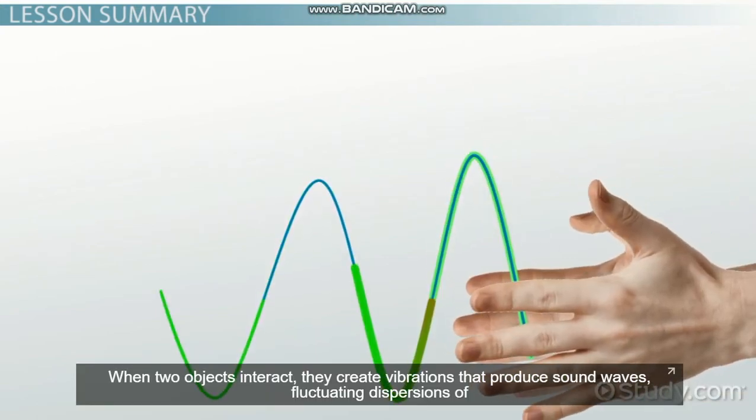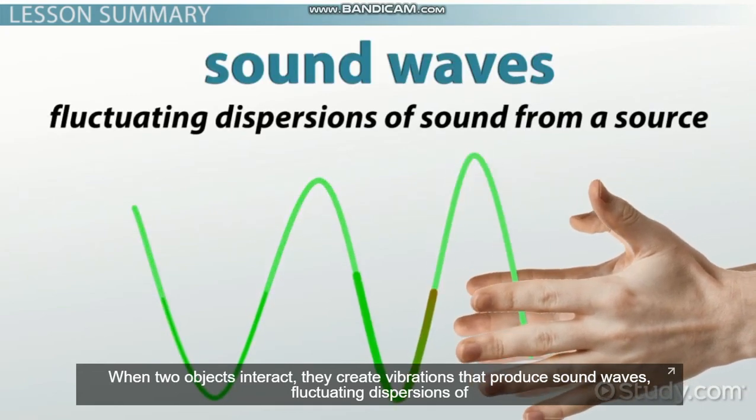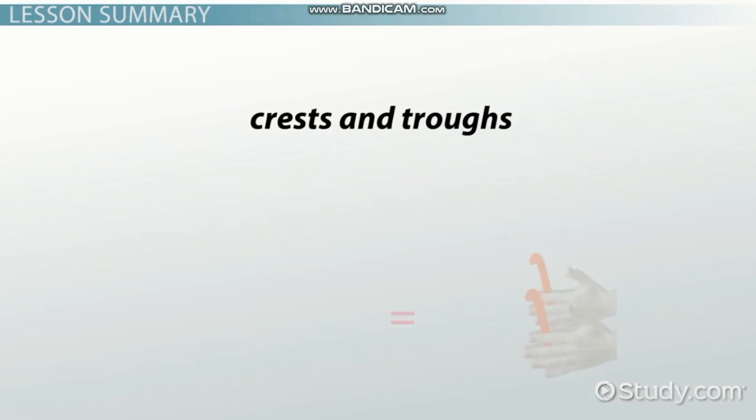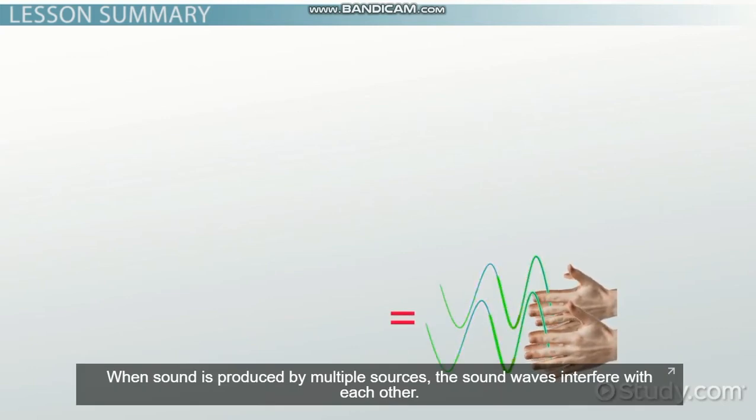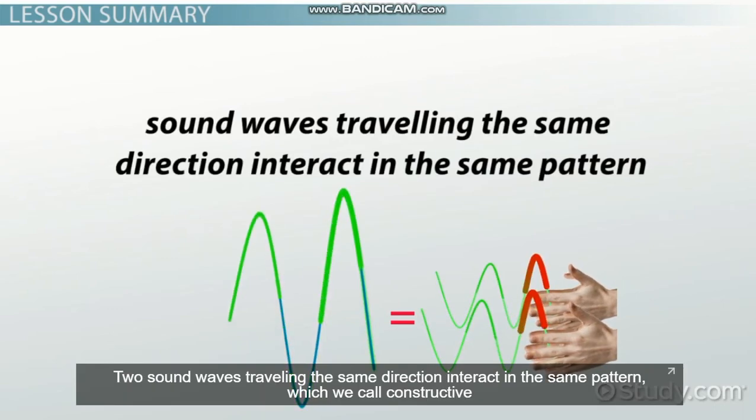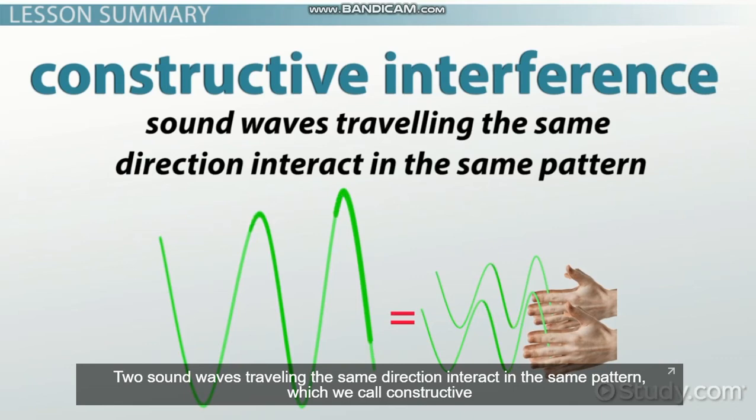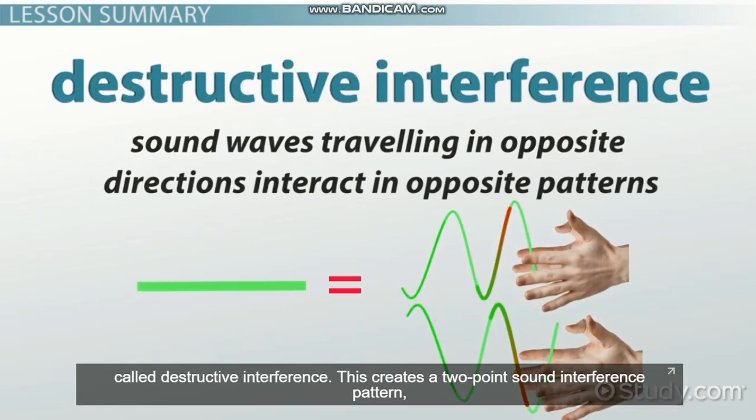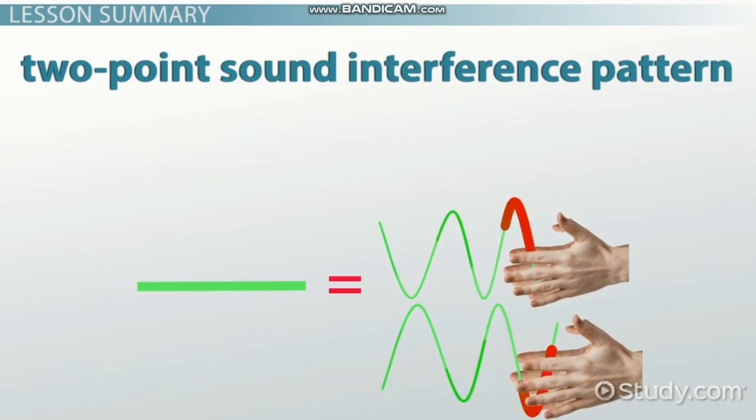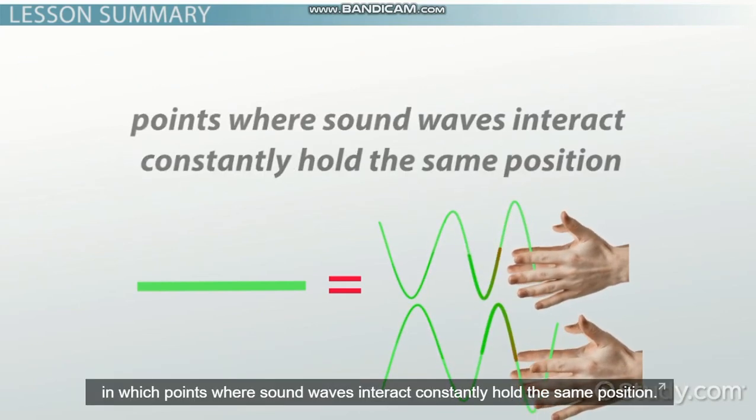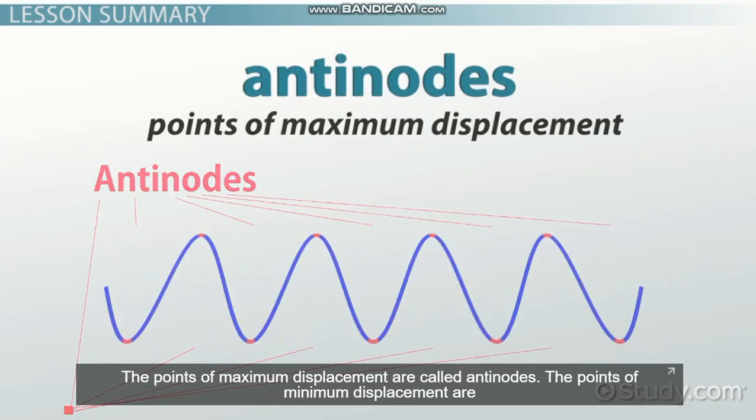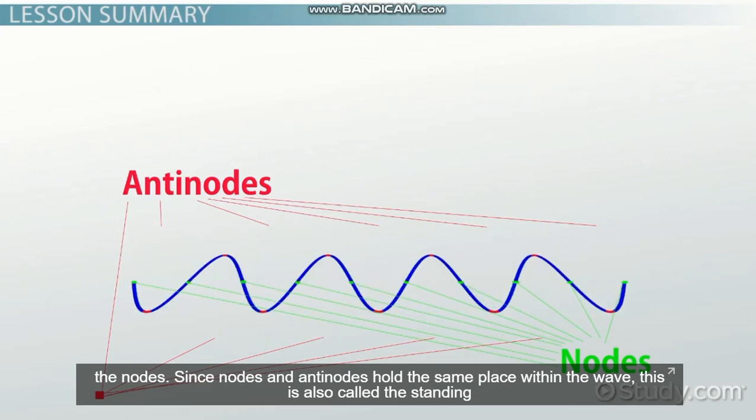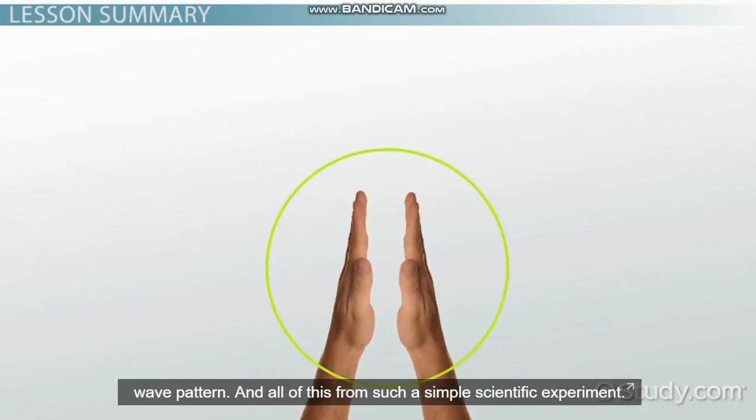When two objects interact, they create vibrations that produce sound waves—fluctuating dispersions of sound from a source. Sound waves, like ripples in water, pulse outward in a pattern of crests and troughs. When sound is produced by multiple sources, the sound waves interfere with each other. Two sound waves traveling in the same direction interact in the same pattern, which we call constructive interference. Sound waves traveling in opposite directions interact in opposite patterns, called destructive interference. This creates a two-point sound interference pattern in which points where sound waves interact constantly hold the same position. The points of maximum displacement are called antinodes. The points of minimum displacement are the nodes. Since nodes and antinodes hold the same place within the wave, this is also called the standing wave pattern. And all of this from such a simple scientific experiment.